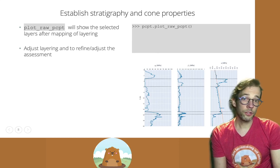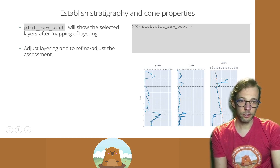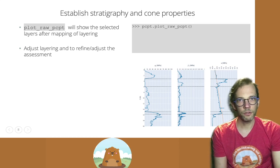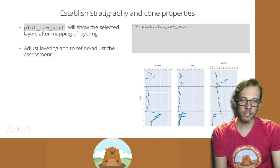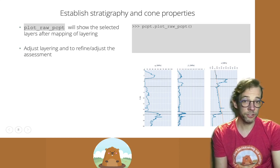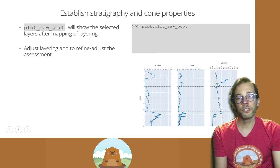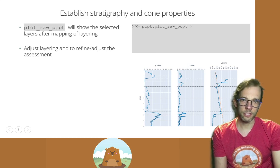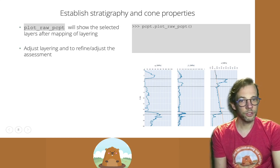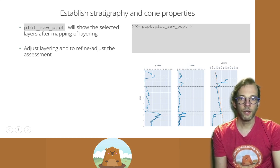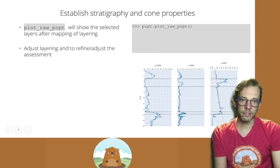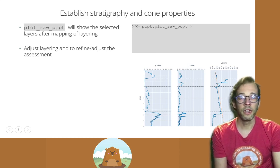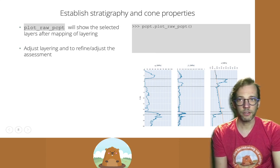Once we have those layers mapped to our CPT data, we can execute the plot raw CPT method again to plot the raw CPT data. And we will see that the layers are now added to that CPT trace that allows you to visually investigate whether your layering that was selected is fit for purpose.